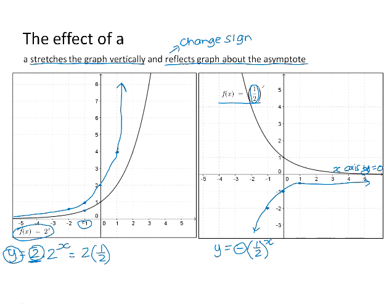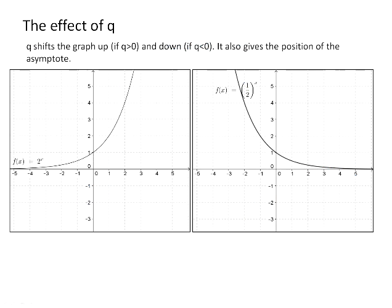So those are the two effects of the a. If we have a look at the effects of q, as with all other functions that we've learned, it shifts the graph up if q is positive, and it shifts the graph down if q is negative. And because it shifts the graph up and down, it gives you the position of the asymptote. So it's quite an important feature.